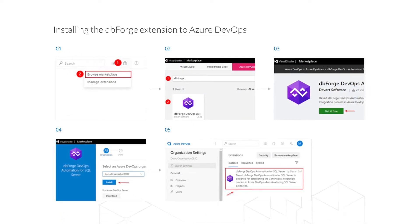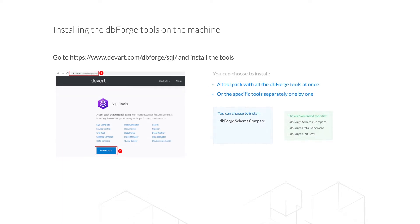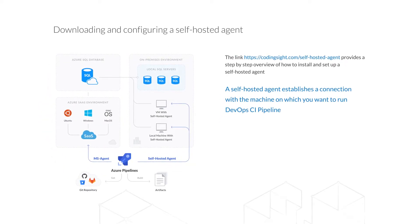Having created the organization and the project, you need to install the dbForge DevOps automation application. To do this, open the Visual Studio Marketplace website, select the Azure DevOps tab, enter dbForge in the search box, and find the dbForge DevOps automation product that you need to install. You can download all the dbForge tools involved in the CI process from the SQL tools page at devart.com, then install the tools. Please remember that the tools must be physically installed on the machine where the pipeline will be executed. A self-hosted agent is an essential element for starting a pipeline execution, and on the screen you can see a link where you can download and install the agent by following comprehensive instructions.